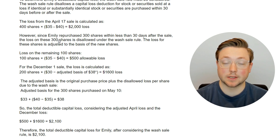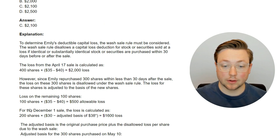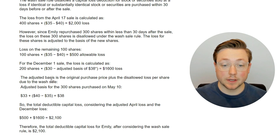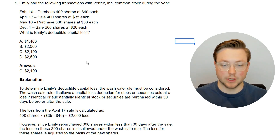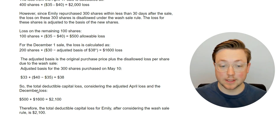The loss for the disallowed shares is adjusted to the basis of the new shares. The loss on the remaining 100 shares is $500 — these are the shares not disallowed, so $500 was allowed. For the December sale there was a $1,600 loss, but the basis is now different. The adjusted basis is the original purchase price plus the disallowed loss per share due to the wash sale — $5 per share — so $33 plus $5 equals $38. The total deductible capital loss is the $500 allowed after the wash sale plus the $1,600 December loss, for a total of $2,100.